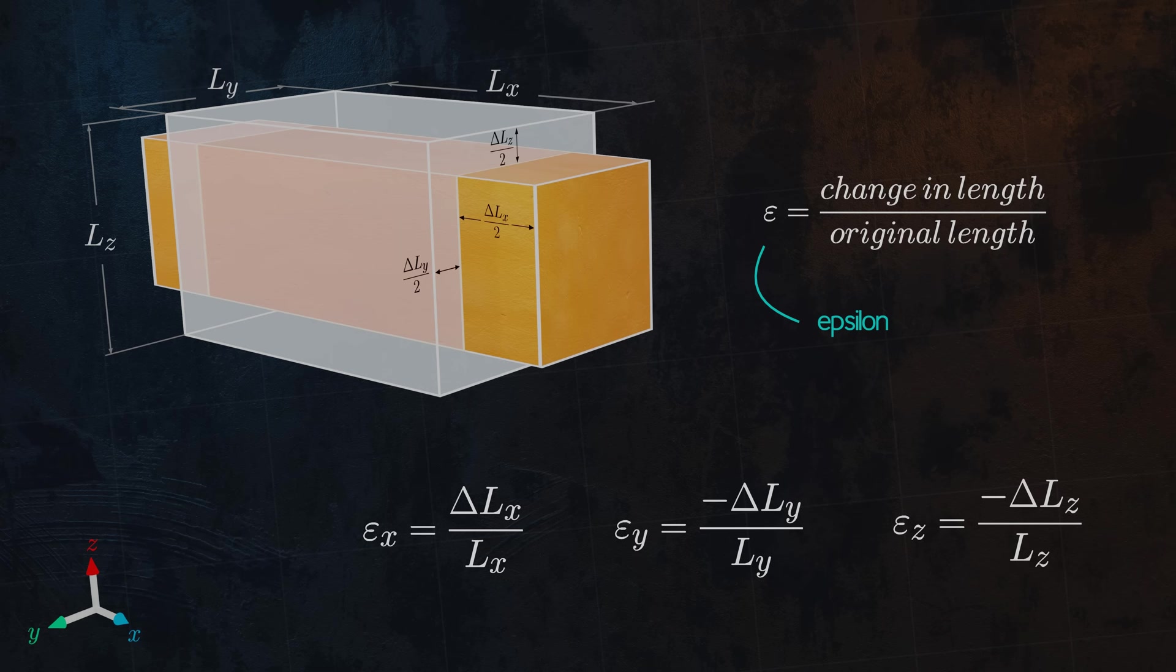When we apply our longitudinal load, it turns out that the resulting strains in the lateral directions are equal. And here is the interesting part, they are proportional to the strain in the longitudinal direction. The ratio between the longitudinal strain and the lateral strain is actually a material constant.